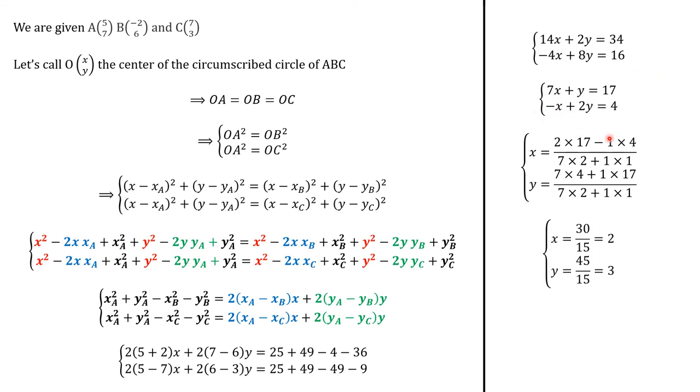So we perform simple computations. This is going to be 30, and 30 over 15 is 2. This is going to be 45, and 45 over 15 is 3. So we have found the coordinates of the center of this circle, which is (2,3).